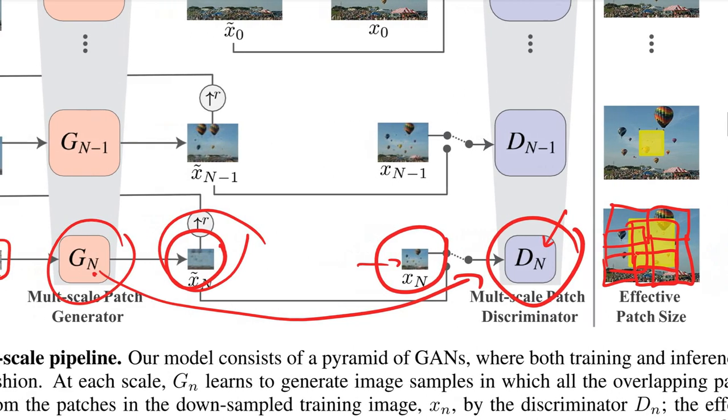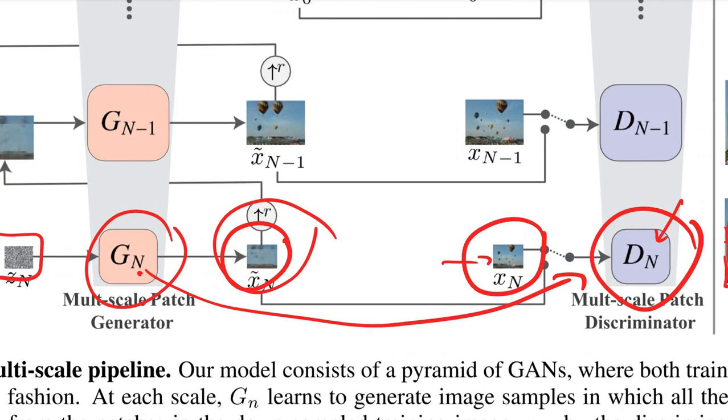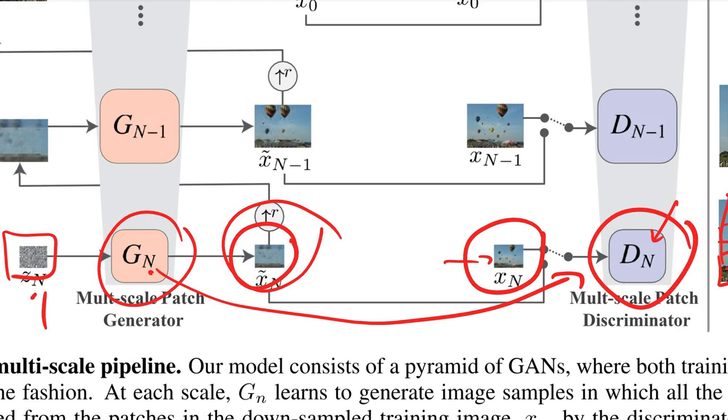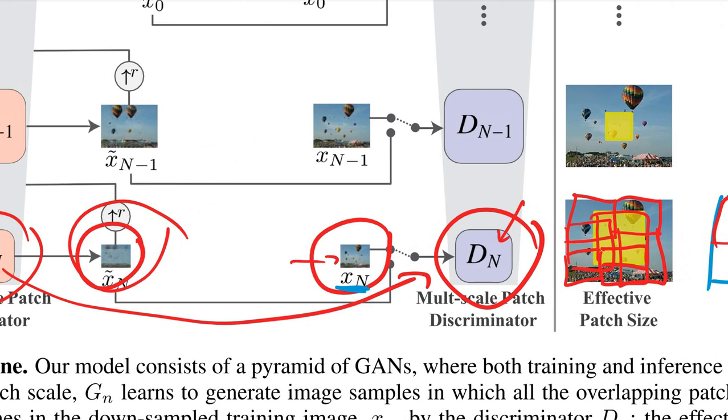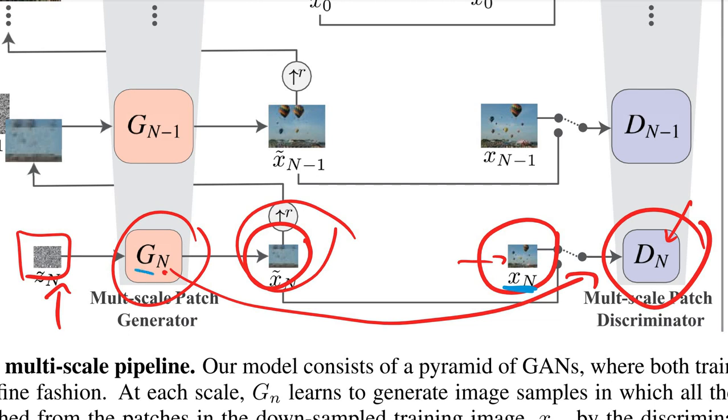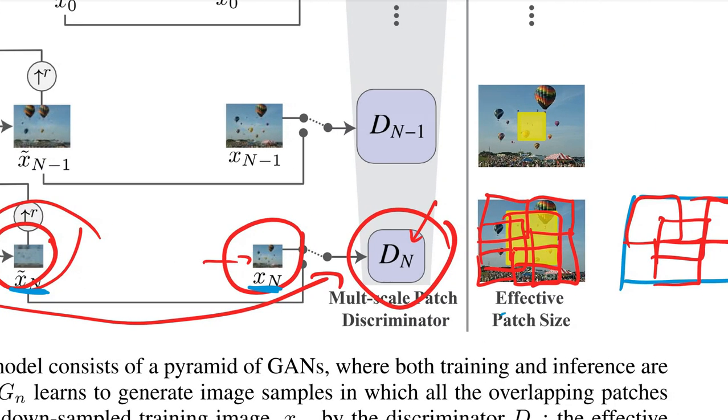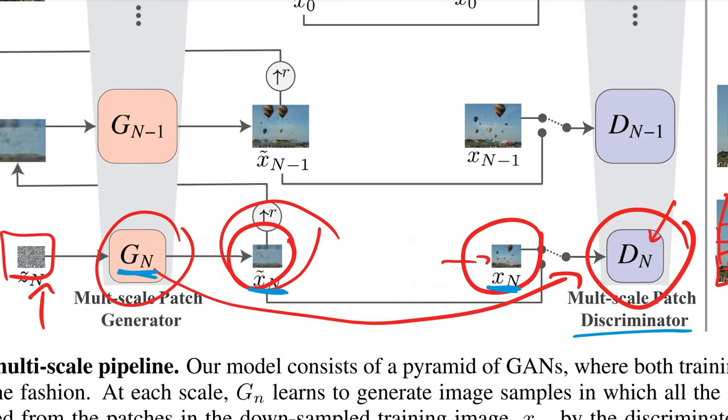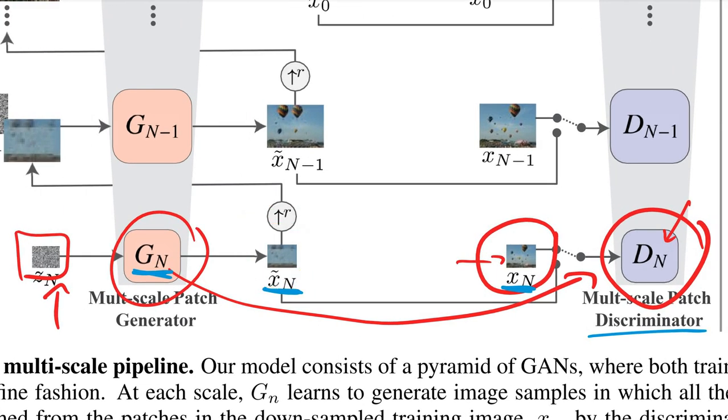So this is at the lowest scale. You remember, you input the noise and the lowest scale in this example is, for example, 25 by 25 pixels. You scale down your original image here, also to 25 by 25. And then you let the discriminator decide. So once you've trained this generator to make very good 25 by 25 pixel images that in this patch way fool the discriminator, you keep it fixed.